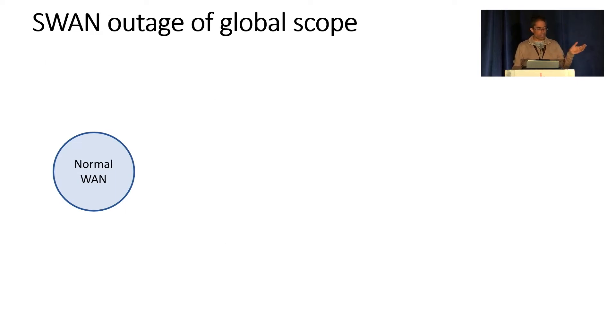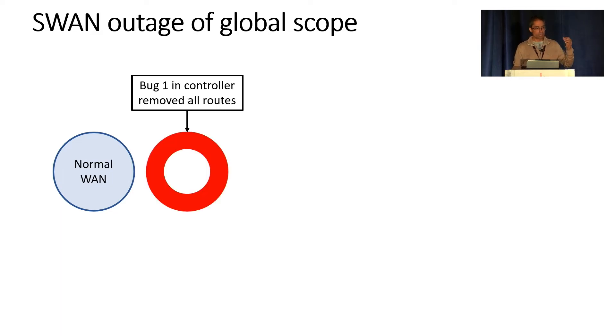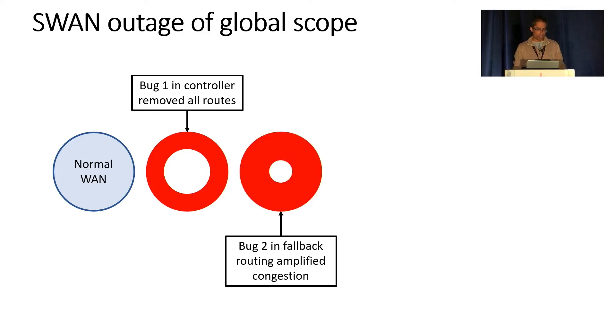The WAN was operating normally and there was a bug that got triggered in the controller, which caused it to remove all the optimized routes. Now, the network can operate when some routes are removed. When it is of that kind of nature, it would cause congestion. And that's what I'm showing by that red ring. So there's congestion across the network triggered by the first bug. When that happens, traffic goes on fallback routes. But then there was a second bug in the fallback routing, which caused the congestion to amplify. So even more people start to feel problems with their transfers.